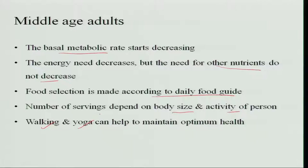Walking and yoga can help maintain optimum health. Along with energy intake, exercise is also important to maintain optimum health. We have to consider how various factors like age, family composition, variety, and cost all affect food selection. Keeping all these factors in view, we should select the best foods, give importance to each age group in the house, and maintain the health of the family. Thank you.